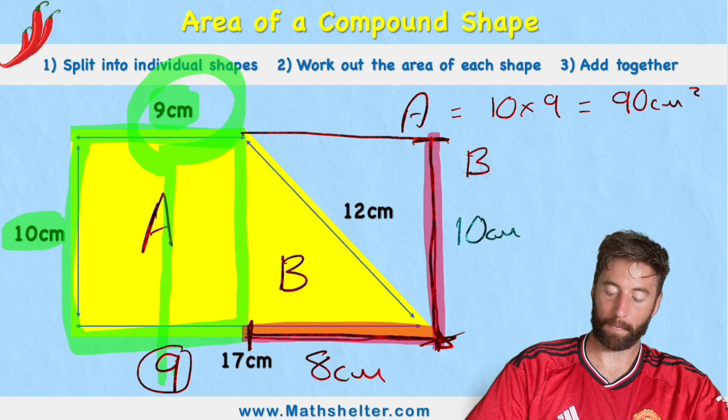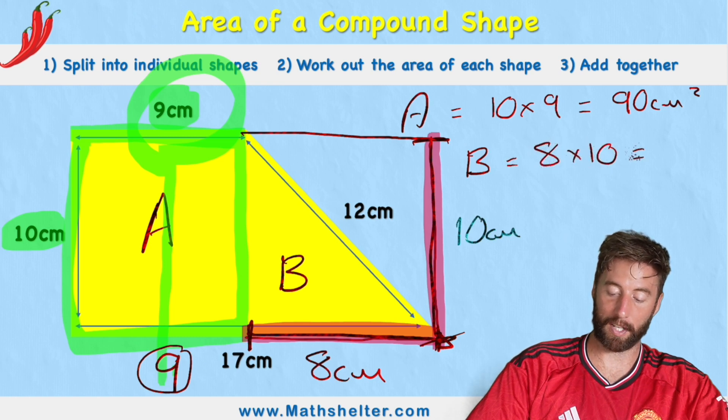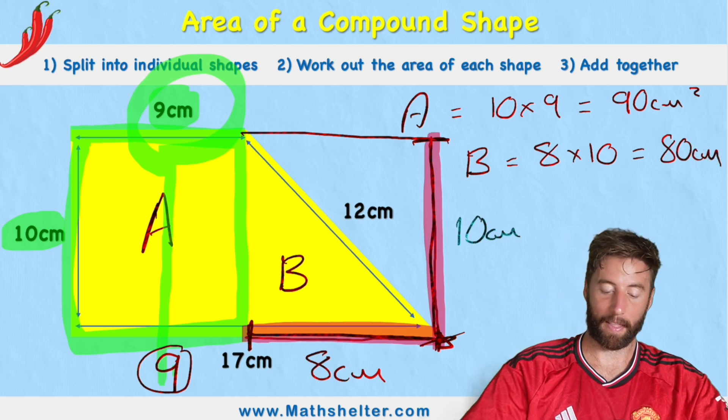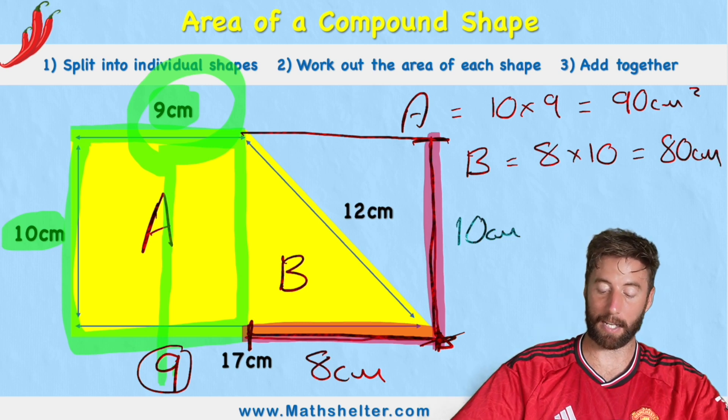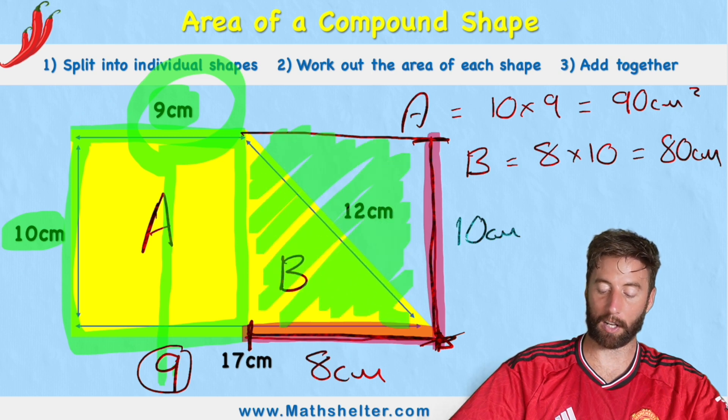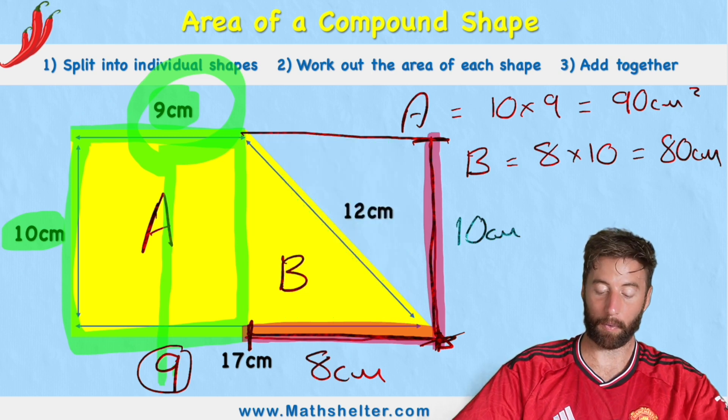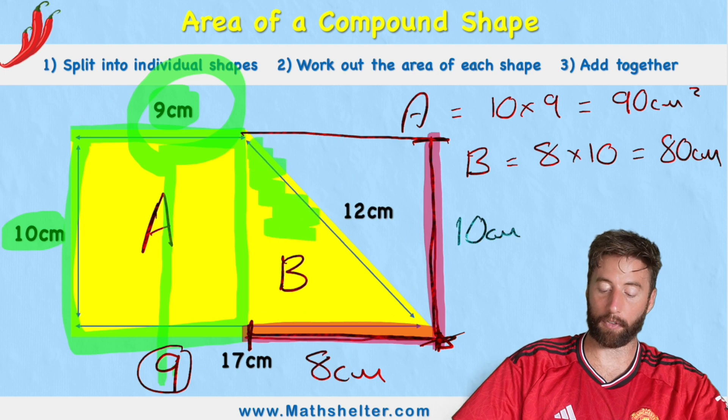So shape B is going to be 8 times 10, which is 80 centimeters. But don't forget that 80 centimeters is the area of all of this rectangle. We don't need all of it, we only want half of it.